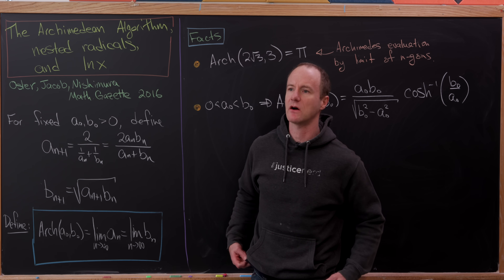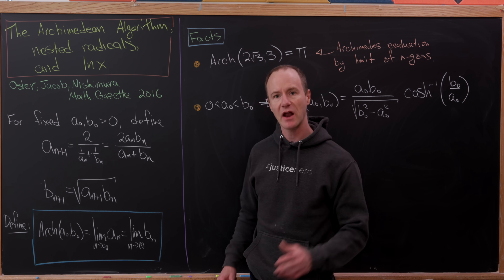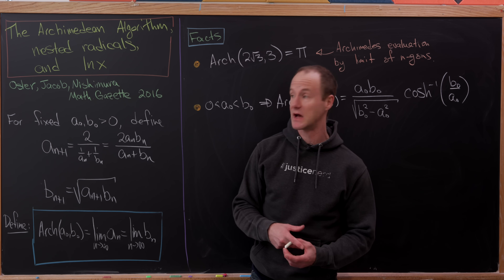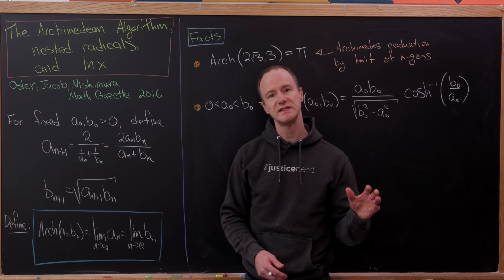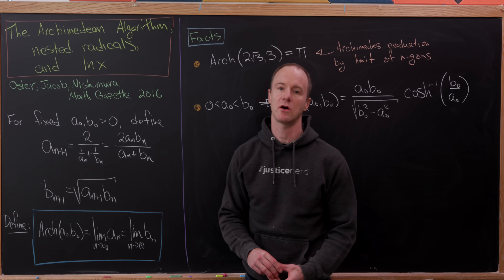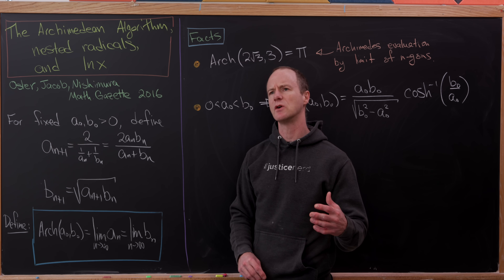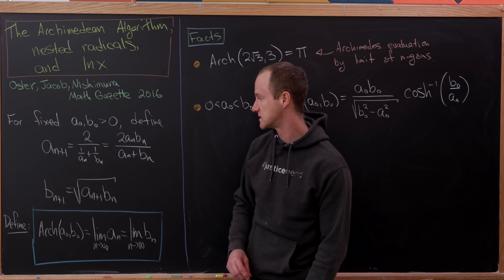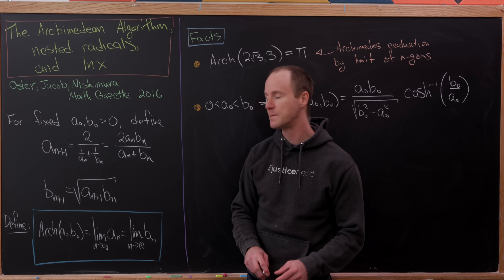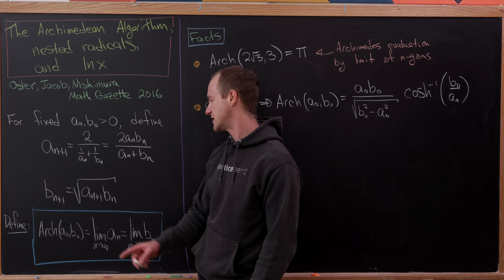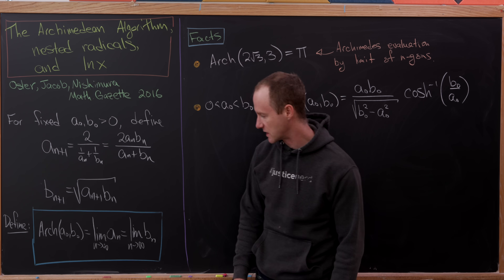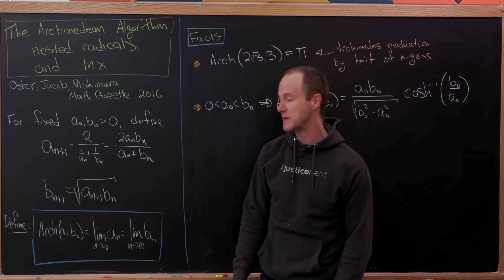Our main tool here will be something I'll call the Archimedean mean. We start with two positive real numbers, a-naught and b-naught, and define two sequences a-n and b-n. a_{n+1} will be the harmonic mean of the previous two terms, which simplifies to 2·a_n·b_n over (a_n + b_n). Then b_{n+1} will be the geometric mean of a_{n+1} and b_n.